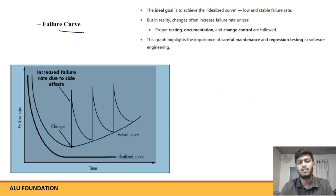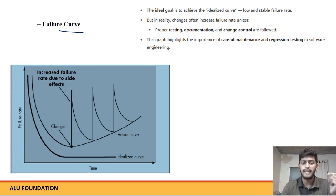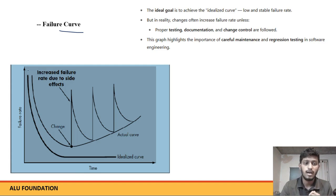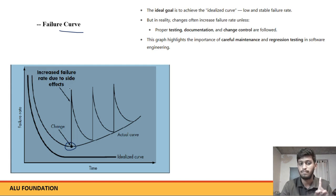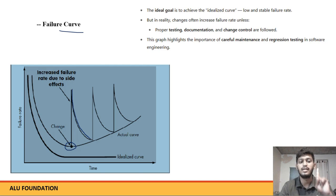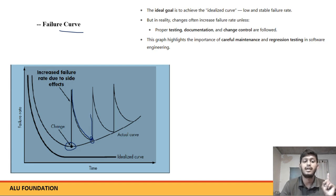So the failure curve — when software is first released, the failure rate is high, then it comes down. The ideal curve should be low and stable. But the actual curve differs from the ideal curve. Changes made to software often increase the failure rate again.